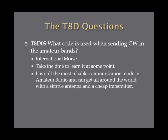What code is used when sending CW in the amateur bands? It's international Morse code. If you have the time, you really should take it and learn Morse code. There's still a lot of communication that goes on via Morse code — it's still the most reliable communication mode, and you can reach all around the world with a very simple antenna and a cheap, low-power transmitter.